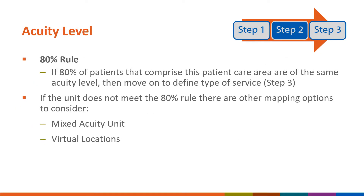After reviewing the available data to determine patient mix, the next step is to determine the acuity level. The 80% rule should be applied when determining an acuity level for a unit based on the patient mix data. If 80% or more of the patients in an area are the same acuity level, then the user can continue on to step three of the mapping flowchart. If the unit does not meet the 80% rule for acuity level, then virtual locations or mixed acuity can be considered for mapping a unit.